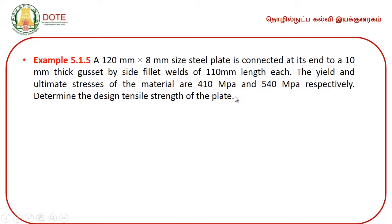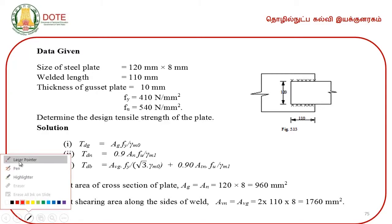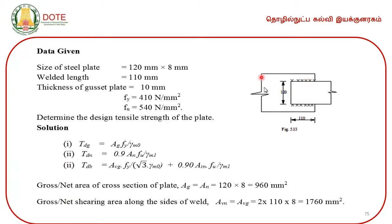We are asked to find the design tensile strength of the plate. This is the gusset plate and this is the plate under tension. The cross-sectional dimensions of the plate are 120 mm by 8 mm. This is the length of connection — in this exercise, the length of connection is only at the top and bottom, that is only in the shearing plane, not in the tension plane.